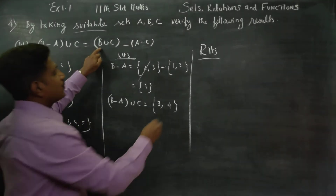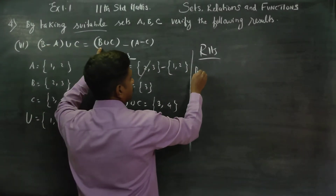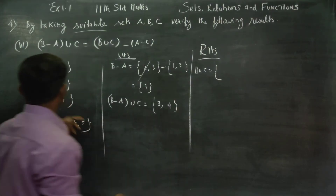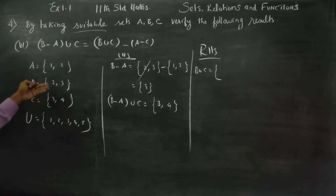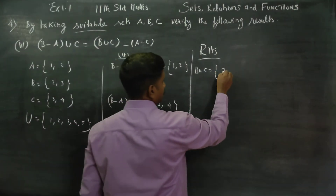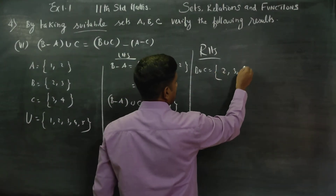Then RHS: B union C. B union C is {3, 4}.